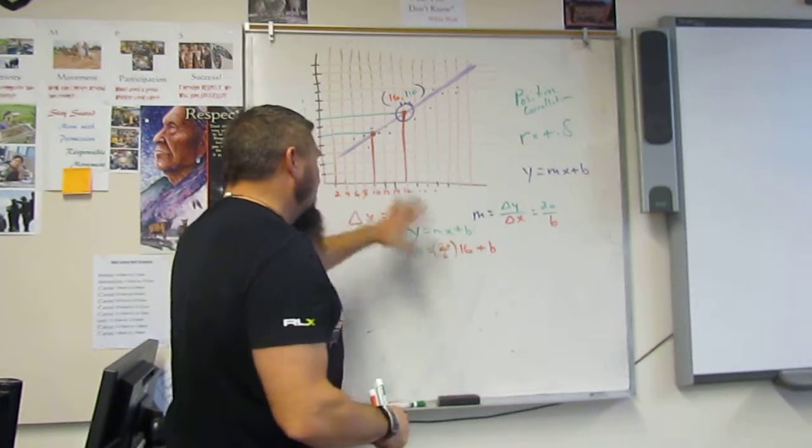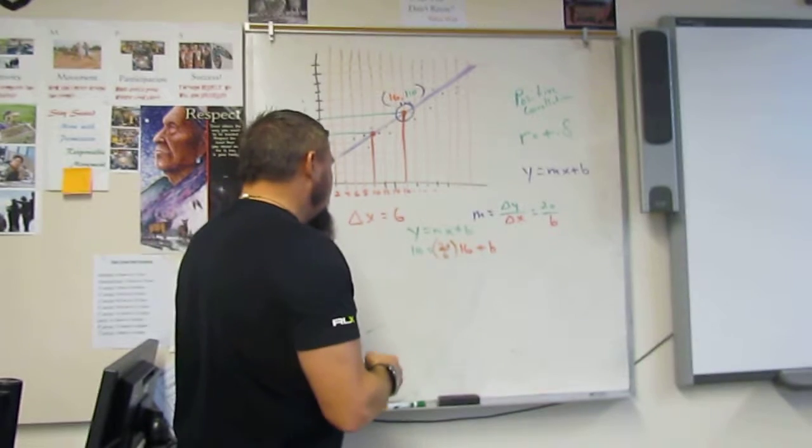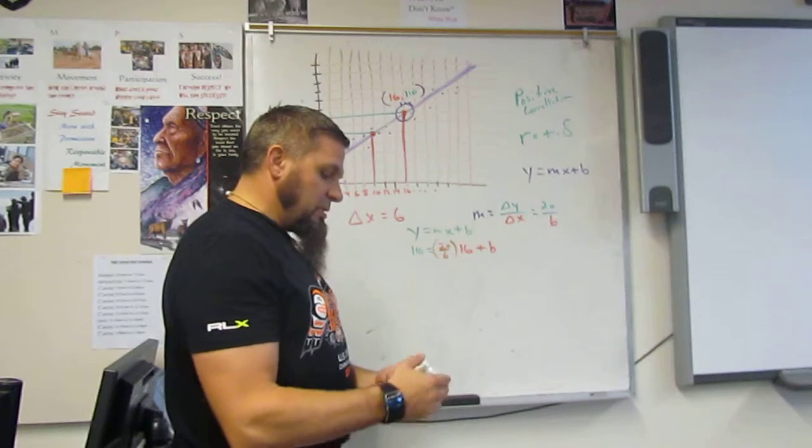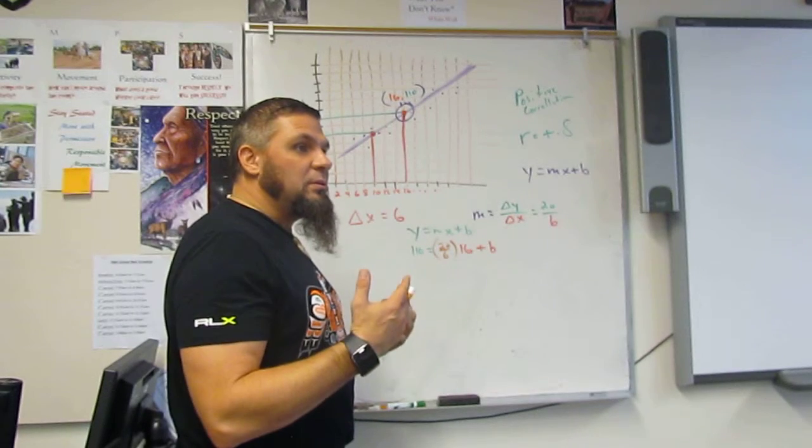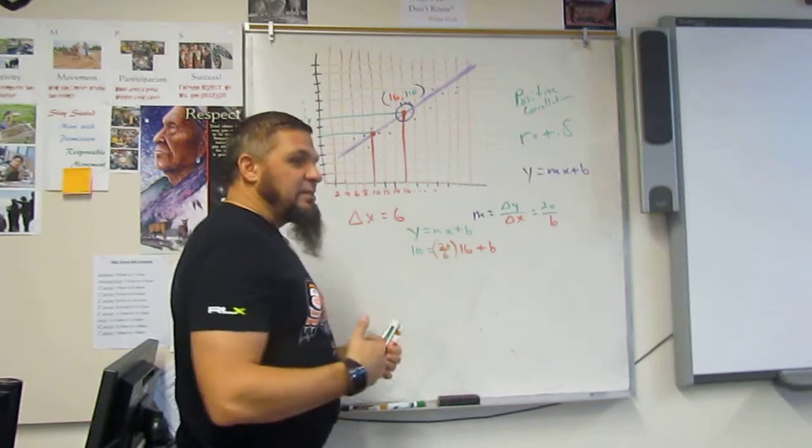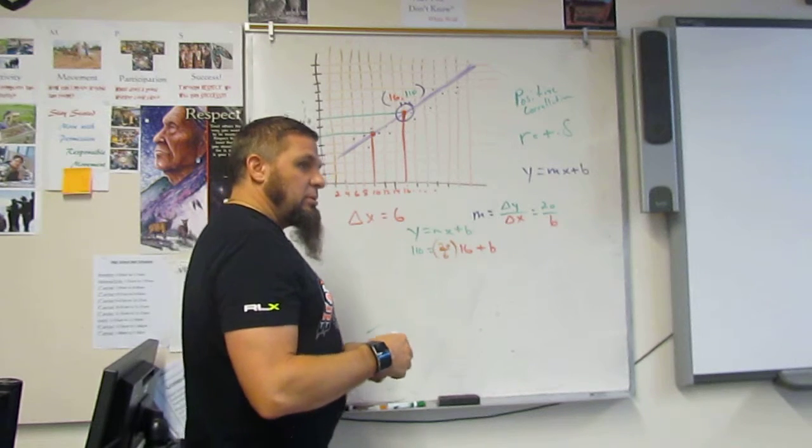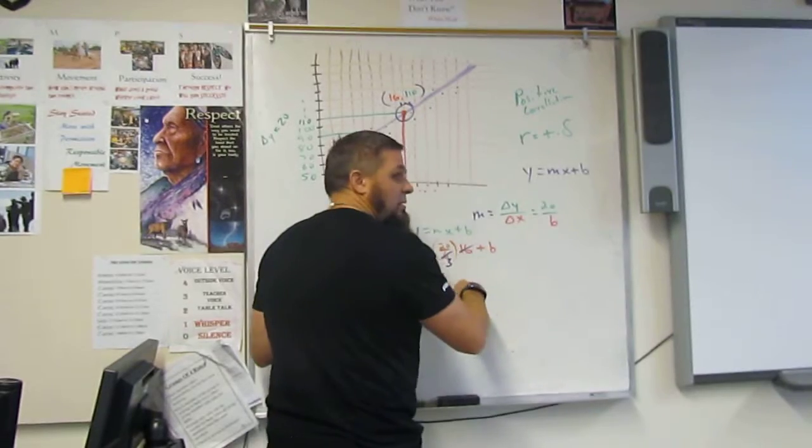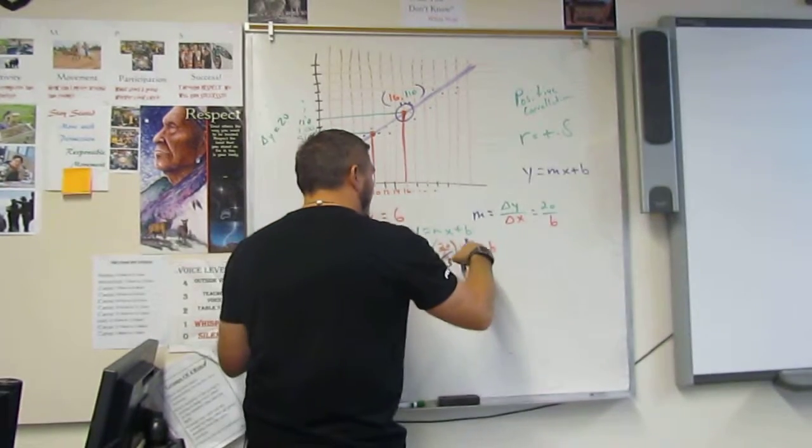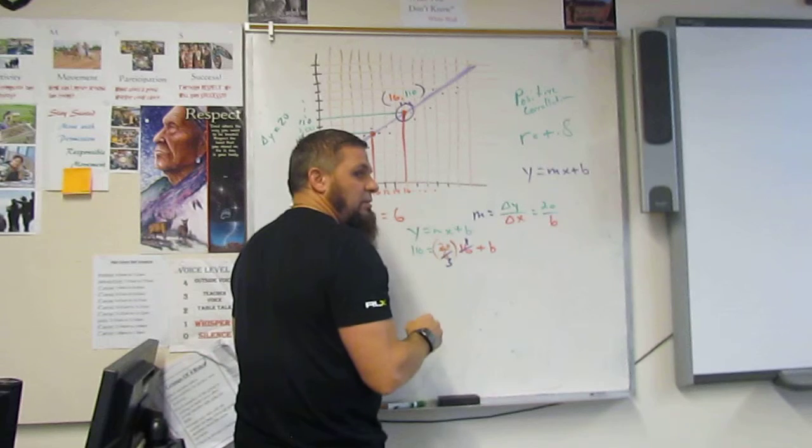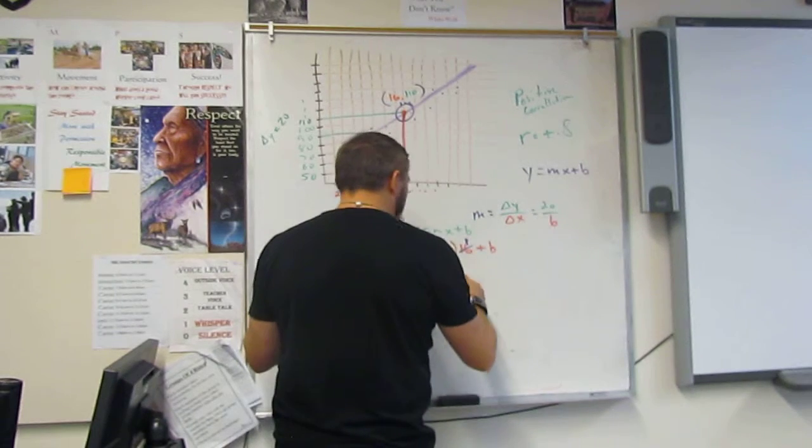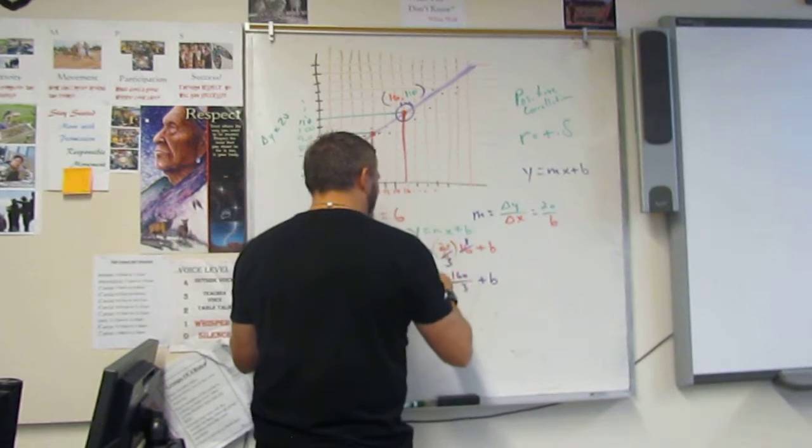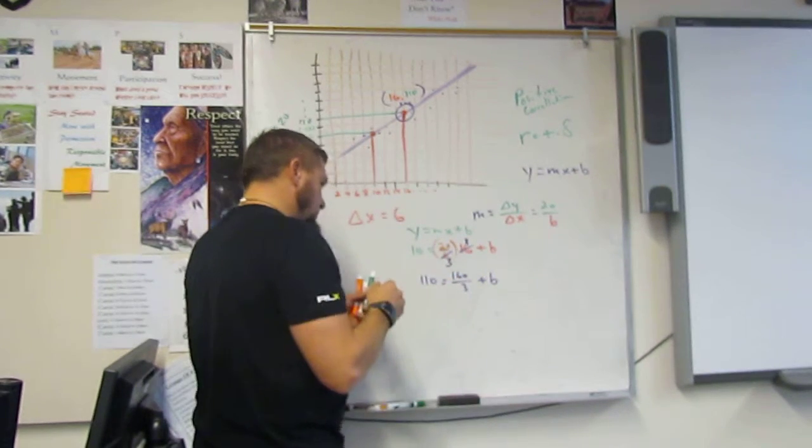And so from there, we do the math. Does 6 go into 16? No. But can we reduce it? Does any number go into 6 and 16? 2. How many times? 3 and 8. And so now we've got 8 times 20, which is 160 over 3 plus B equals 110.